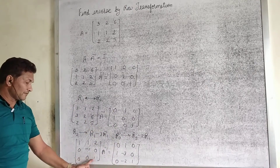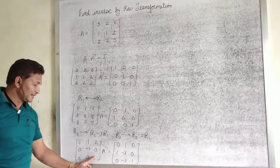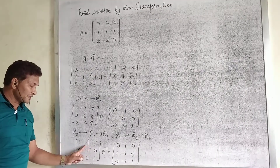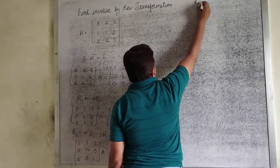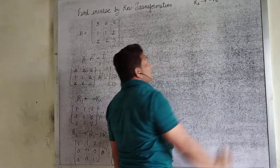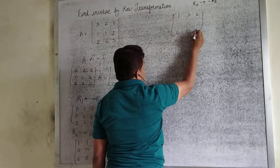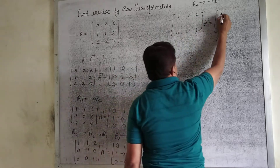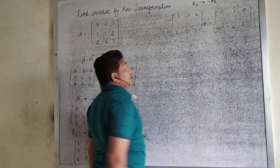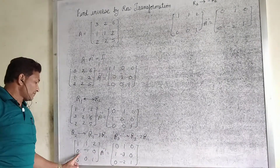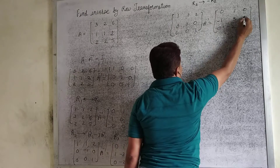After these operations, we have the left-hand matrix with 1, 0, 0 in the first row. Now we need to convert the remaining diagonal elements. We convert R2 by multiplying the second row by minus 1. So the first and third rows remain as they are. On the A-inverse side, the second row becomes: -1, 3, 0 after multiplying by minus 1.